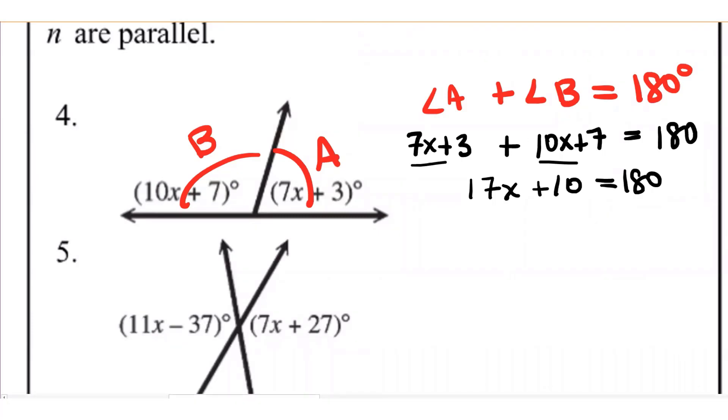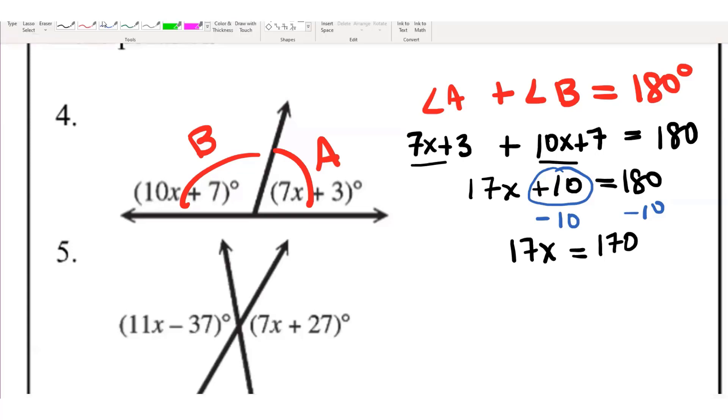Okay. A good idea. Remember, we can do whatever we want as long as we do it to both sides of the equation. So I'm going to get, I want x to be by itself. So I'm going to start by subtracting 10 from both sides. So we're going to get 17x equals 170. Good. All right.